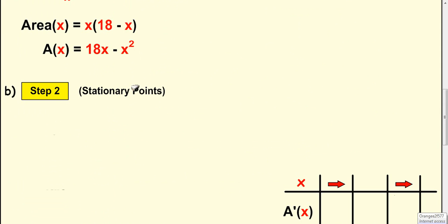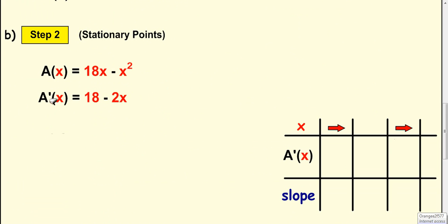So take your function, differentiate it. 18x differentiates to 18. Multiply down with the 2 and get 18 minus 2x. For stationary points, you let the derivative equal 0. So in this case, for maximum value, A'(x) equals 0. Because we know we're trying to find the maximum.